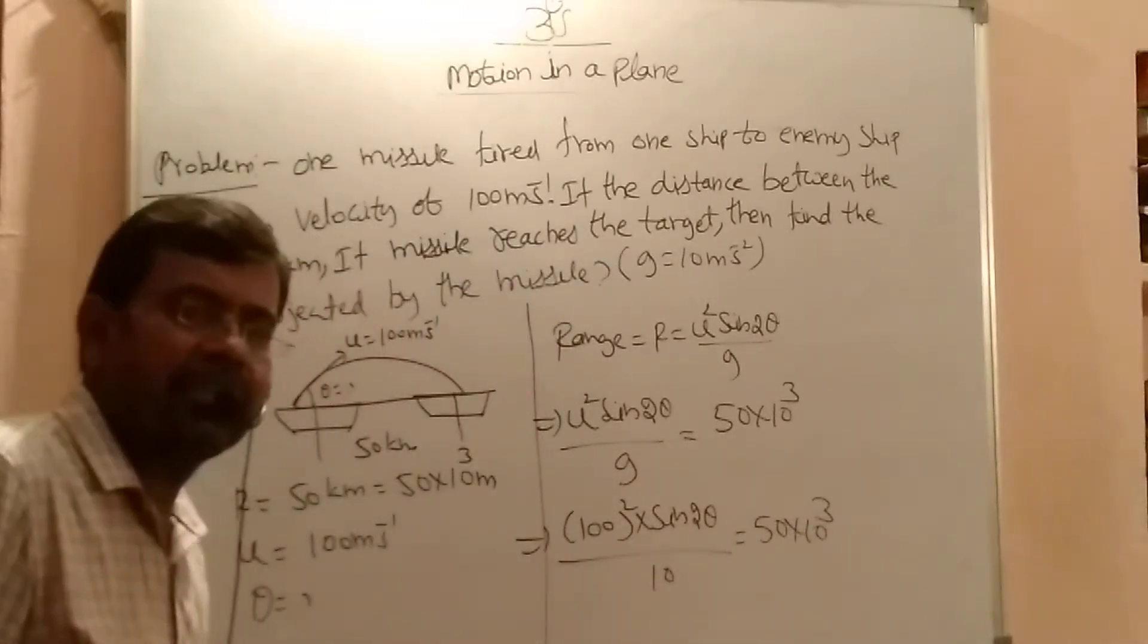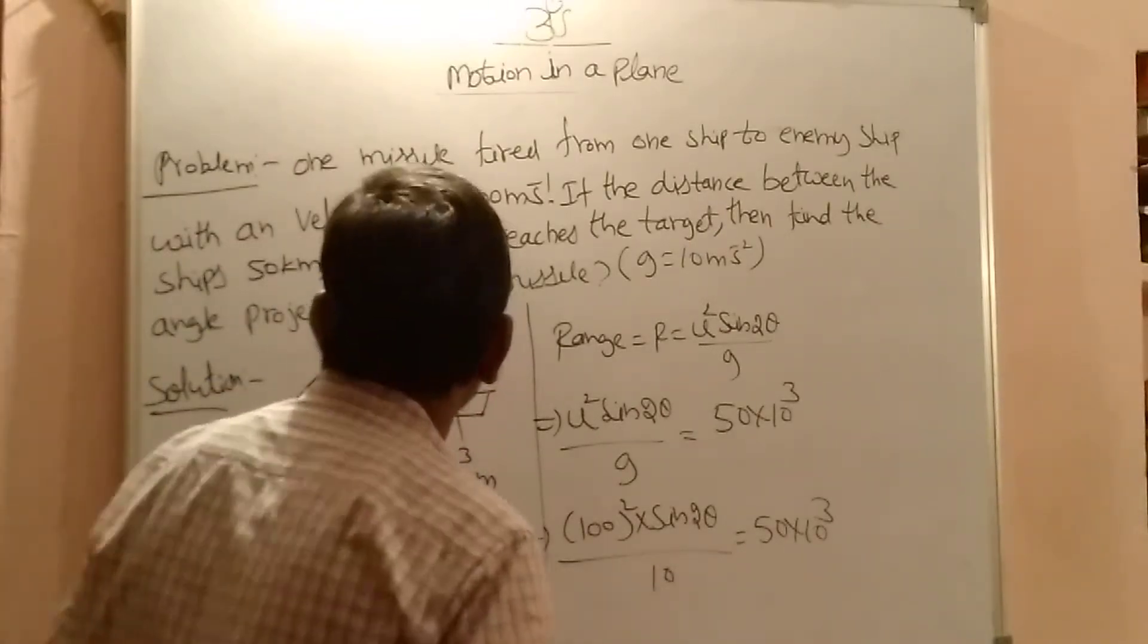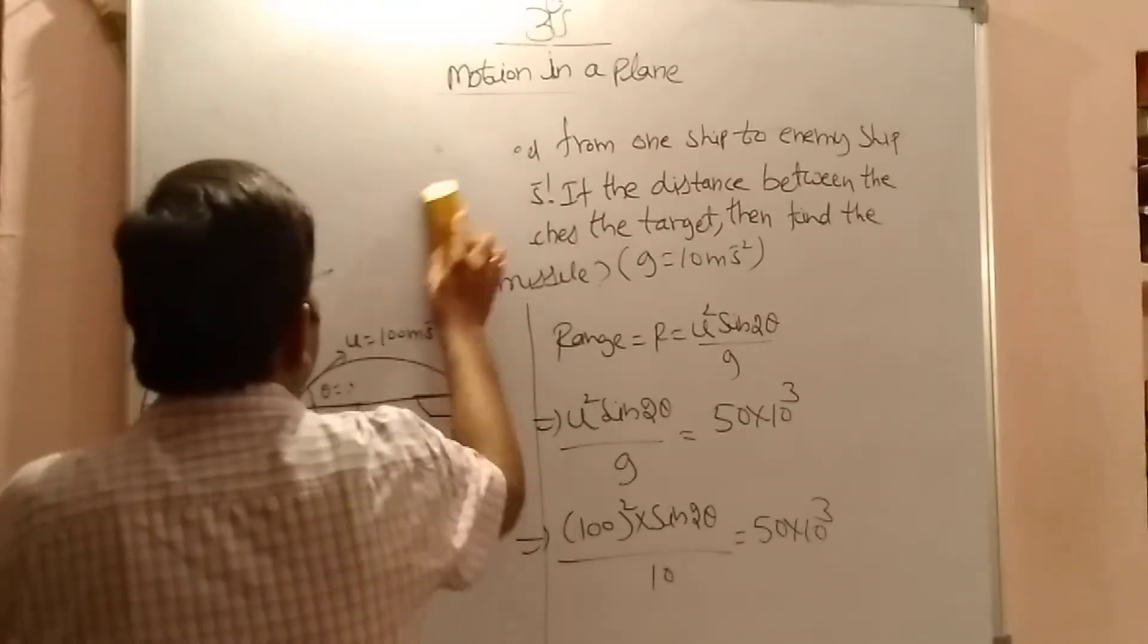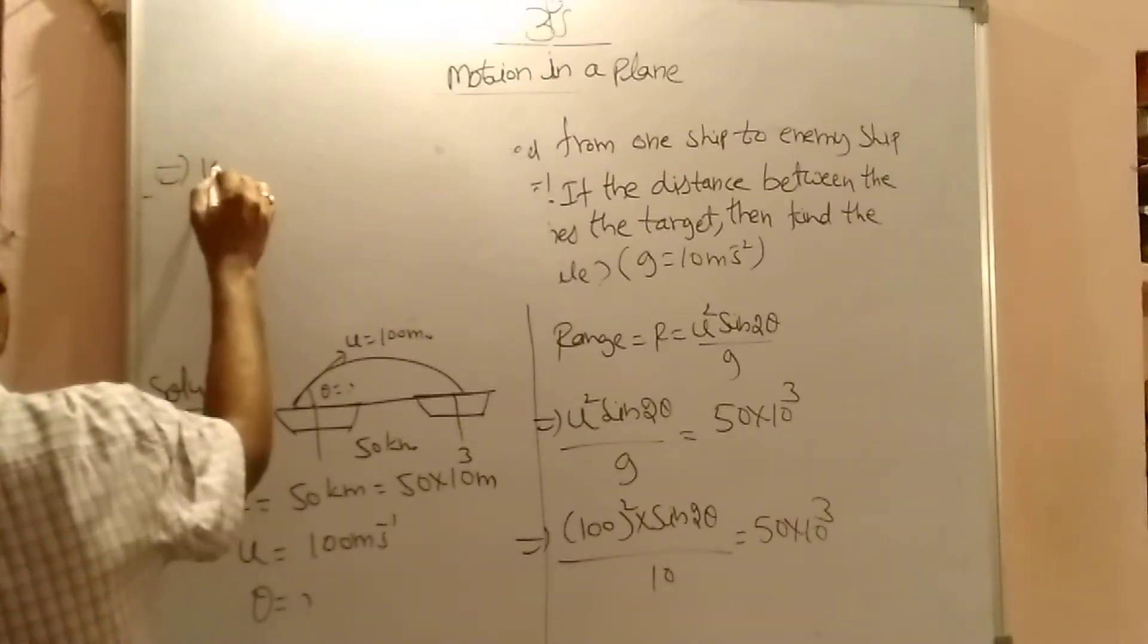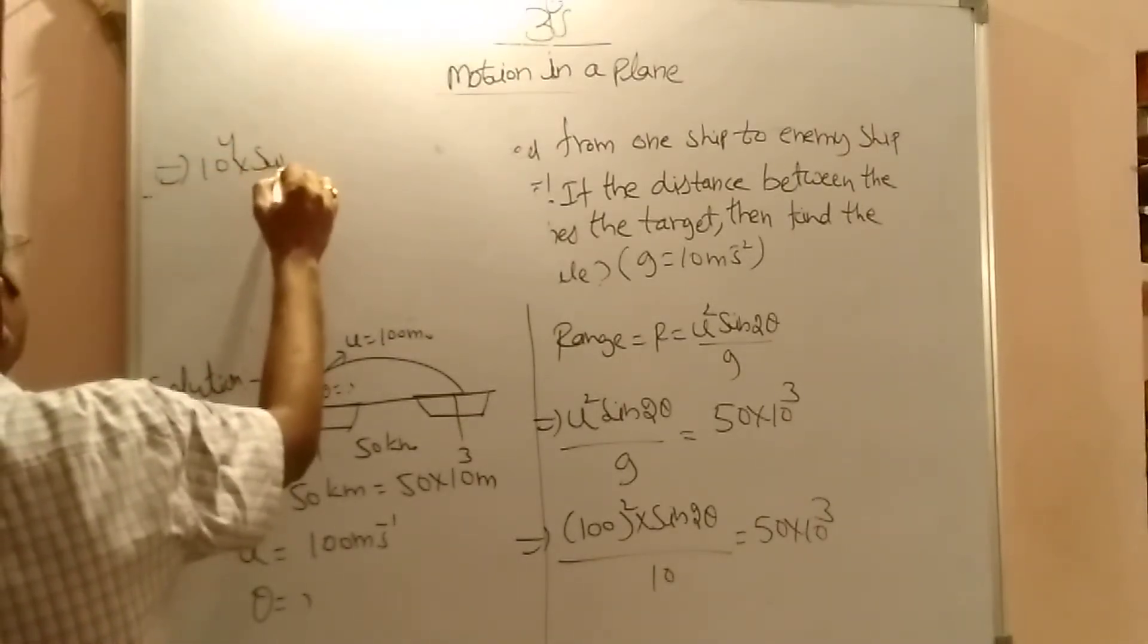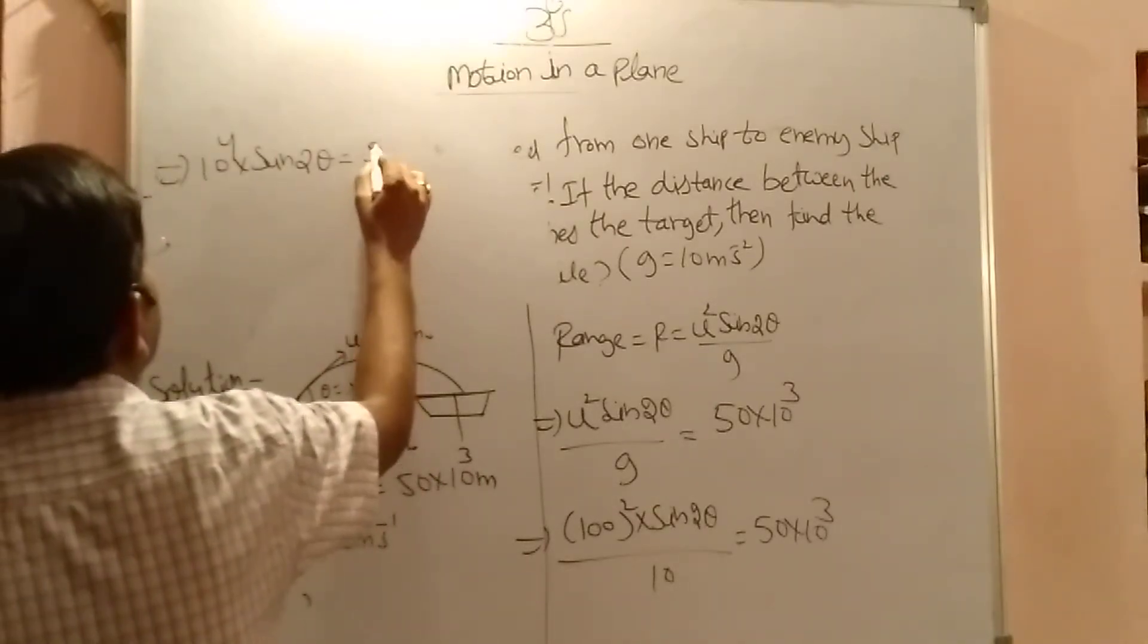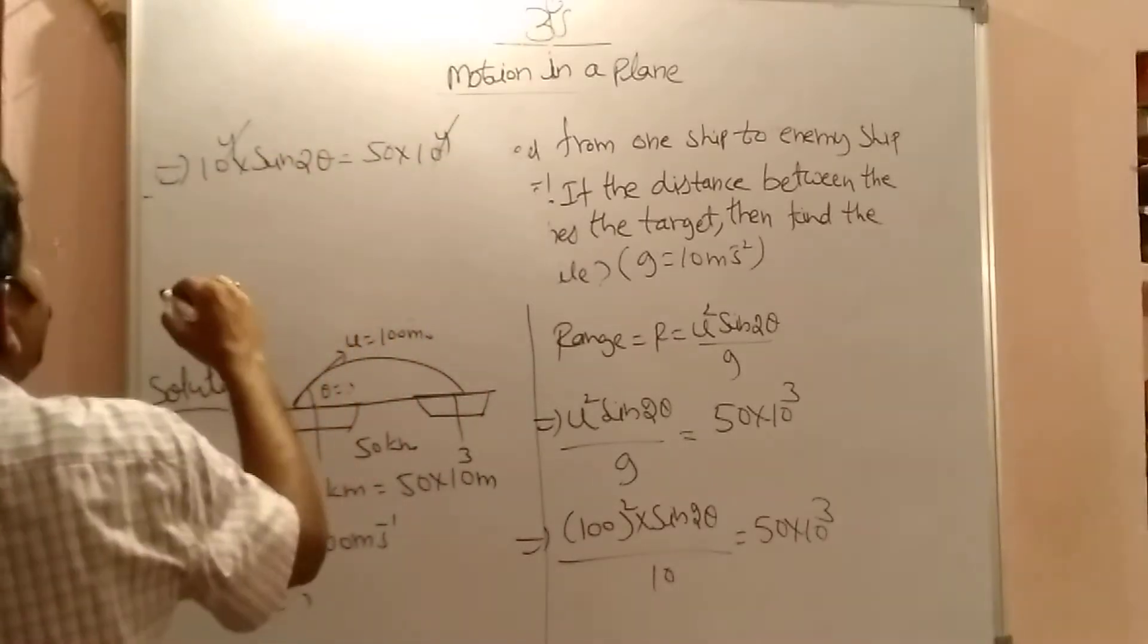By doing measurements we are getting theta. So theta is the angle of projection. Now you write this as, this implies 10 power 4 into sin 2 theta. That equal to 50 into 10 power 4. So this 10 power 4, 10 power 4 cancel.